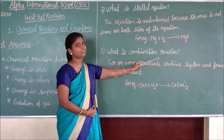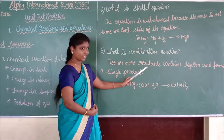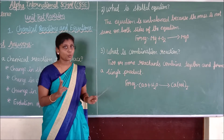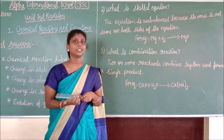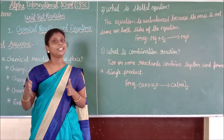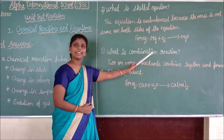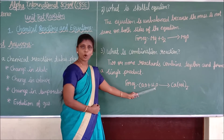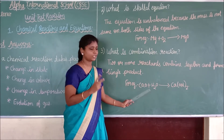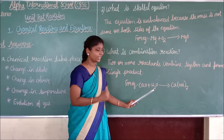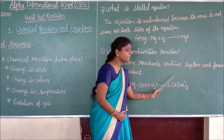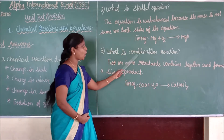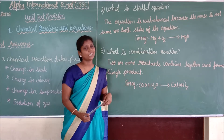What is a combination reaction? Two or more reactants combine together and form a single product — that is called a combination reaction. For example, calcium oxide plus water: these two reactants combine together to give a single product, calcium hydroxide. That is a combination reaction.